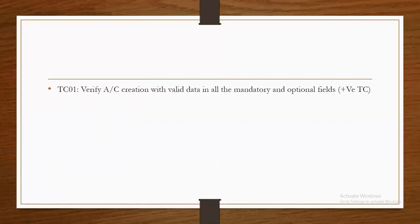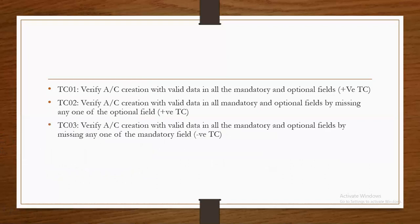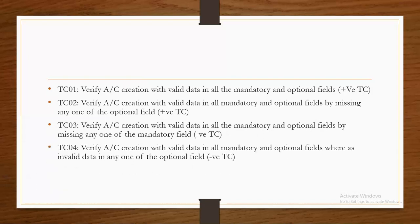Here I have given some example test cases. Test case 1: verify account creation with valid data in all mandatory and optional fields — that is a positive test case. Test case 2: verify account creation with valid data in all mandatory and optional fields by missing any one optional field — even though the optional field is missed, it will accept, so it is a positive test case. Test case 3: verify account creation with valid data in all mandatory and optional fields by missing any one mandatory field — if the mandatory field is not entered, the application will show an error message — that is a negative test case. Test case 4: verify account creation with valid data in all mandatory and optional fields whereas invalid data in any one optional field — even though it is optional, invalid data should not be accepted, so that is a negative test case. Test case 5: verify account creation with different values in the password and confirm password fields — it should not accept — the expectation is negative, so that is also a negative test case.